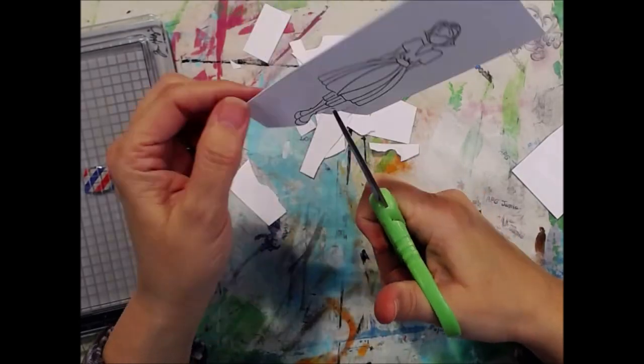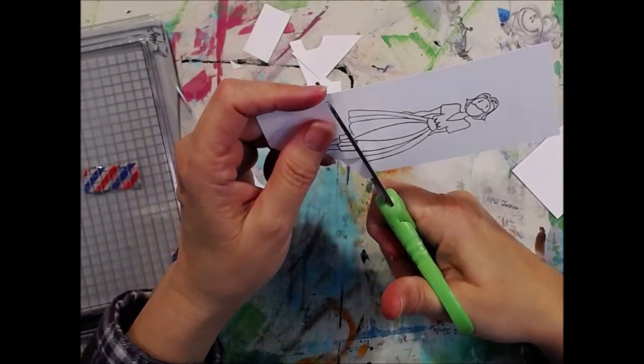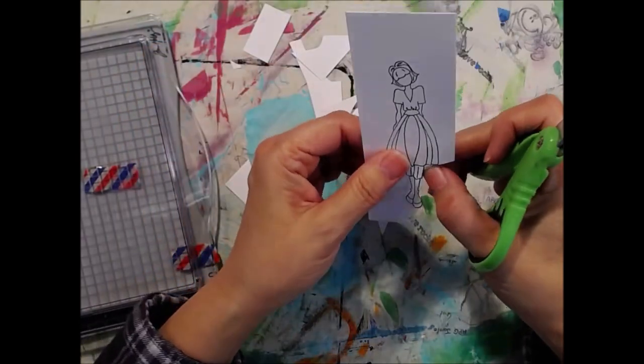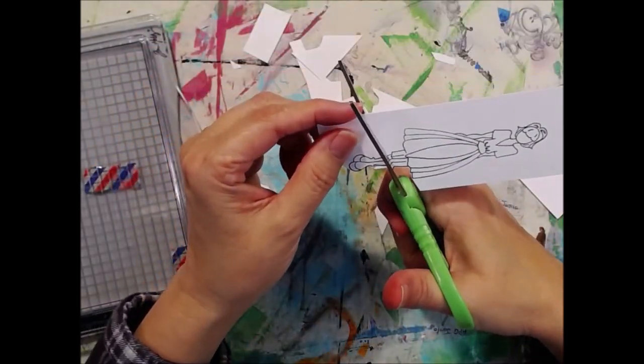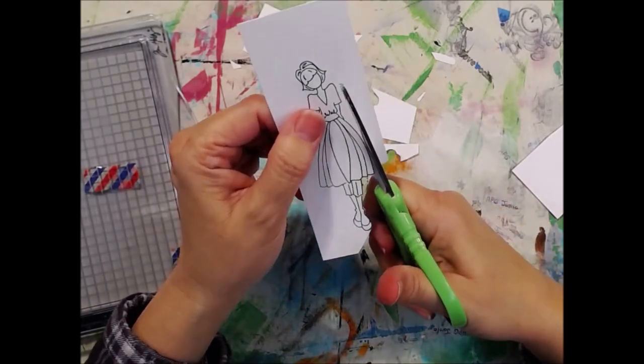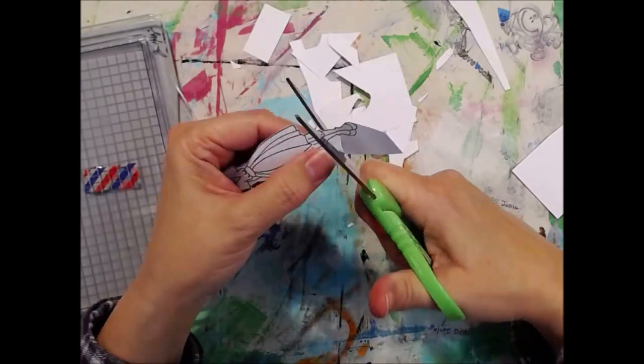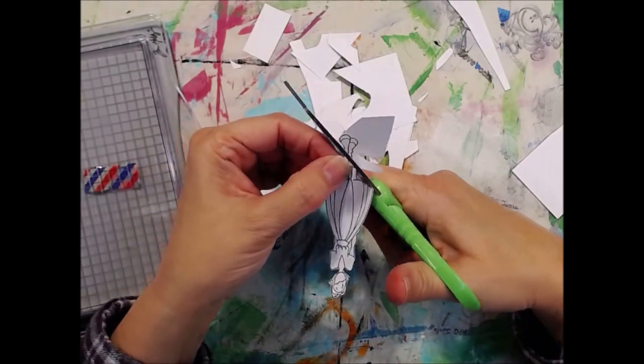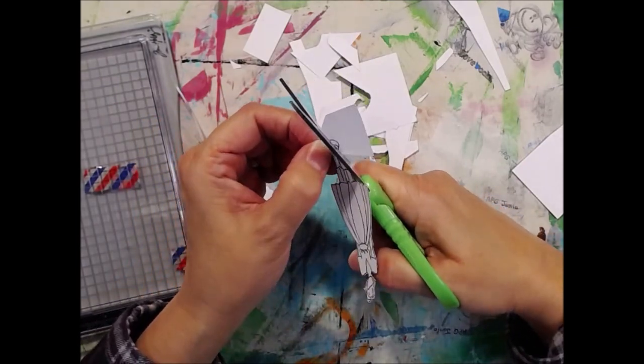I don't know if they make dies for these little Prima doll stamps, but I'm cutting it out because I don't have any dies for it. Slowly cutting. Oh y'all, there's a list of ingredients in the description box below. Click on the word more to see more.